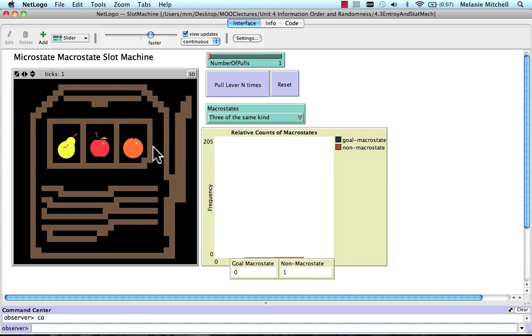The lever's pulled once, we get a new microstate. Pull it again, we get three of a kind there. Very lucky.